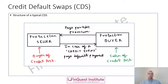We'll learn it through a simple pictorial diagram, because once we learn something through a picture, it becomes easy to understand the concept embedded inside it. Just like any other trade, we'll have two parties entering into a transaction: a protection buyer and a protection seller.